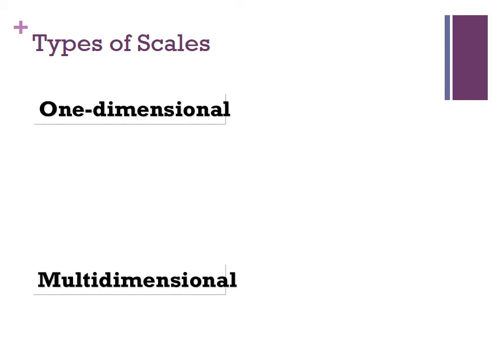In our previous lectures, we've talked about different types of constructs: one-dimensional constructs, and two-or-more-dimensional, or multidimensional constructs, like socioeconomic status, latitude, altitude, longitude, and so on. The types of scales we use are defined by the underlying construct. Constructs that are one-dimensional utilize one-dimensional scales; constructs that are necessarily multidimensional utilize multidimensional scales.